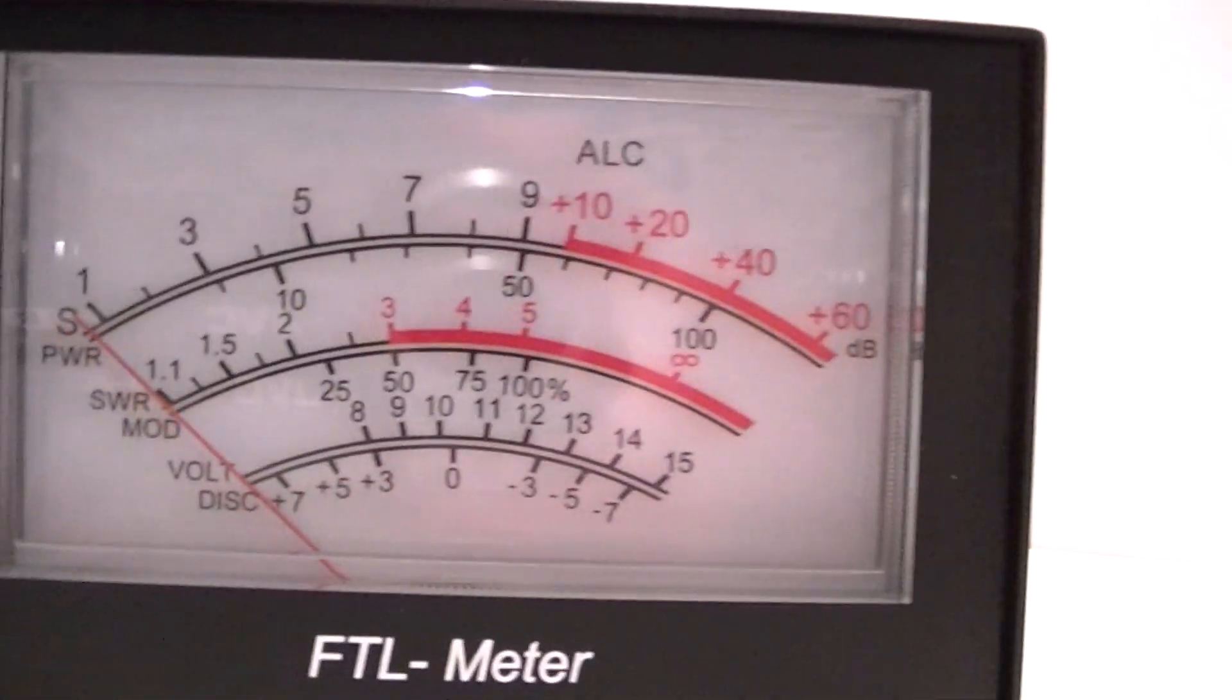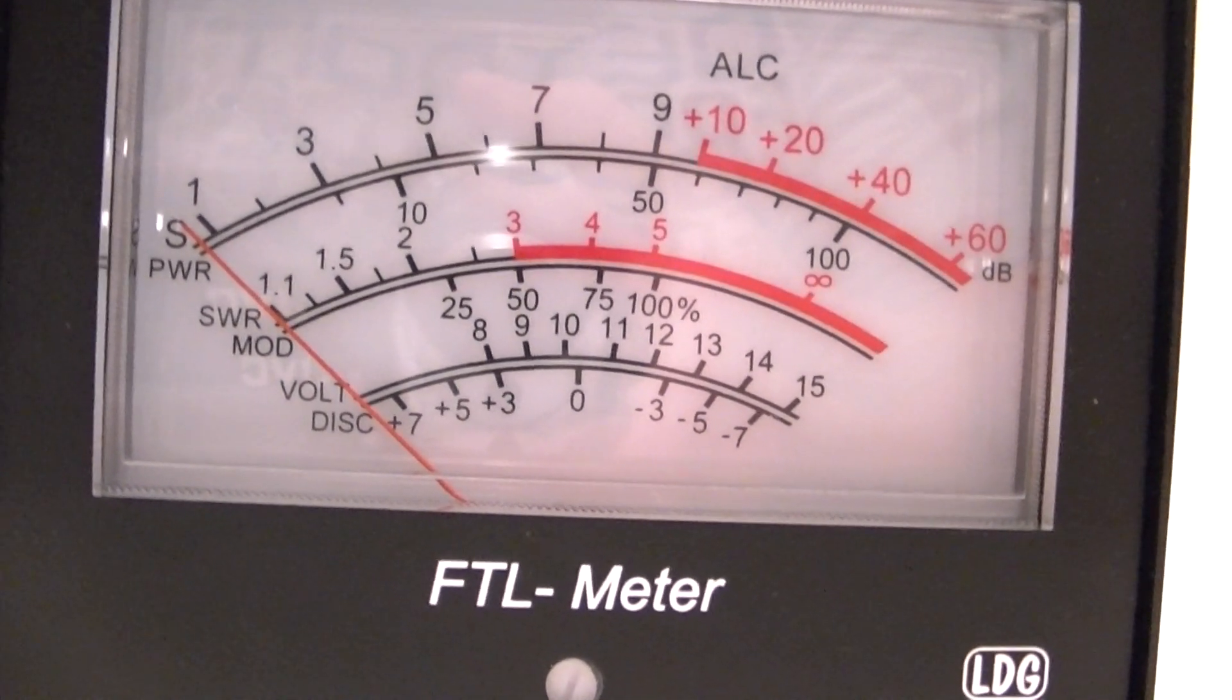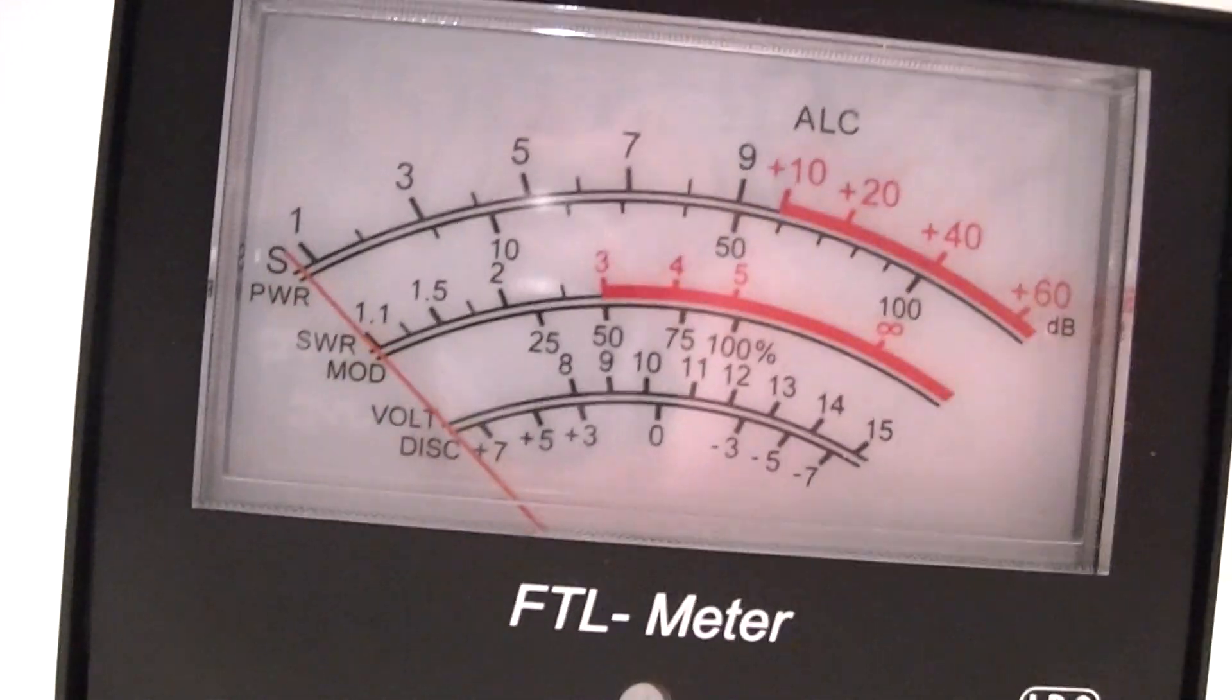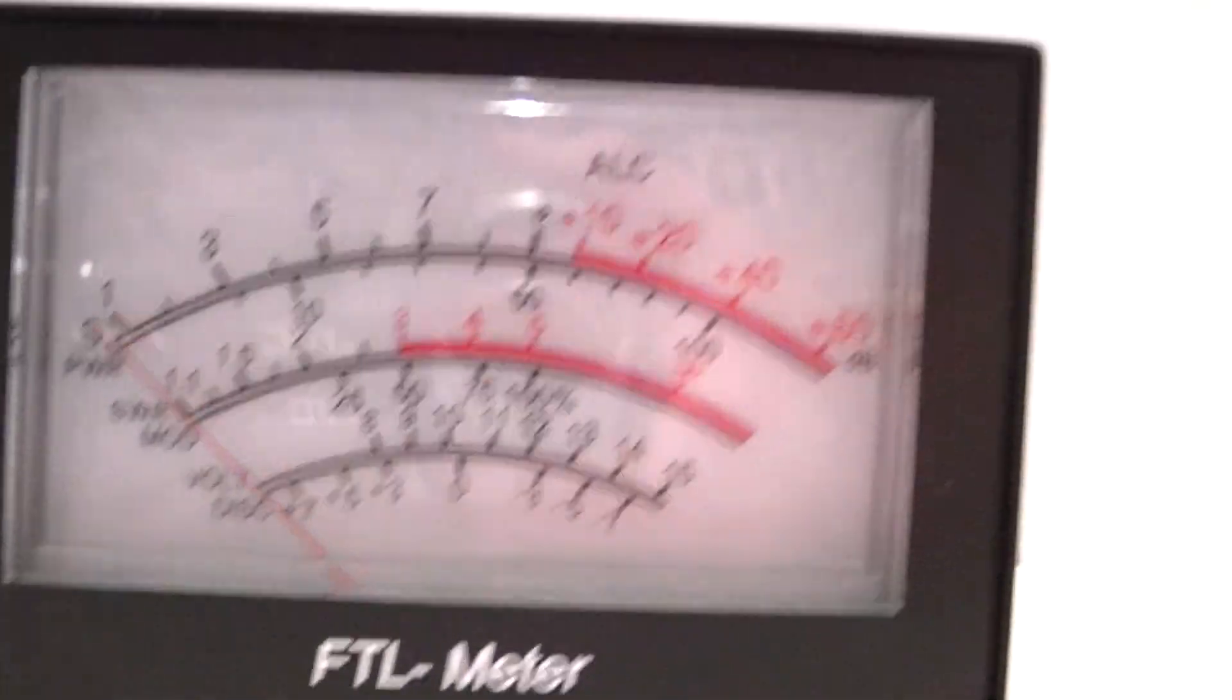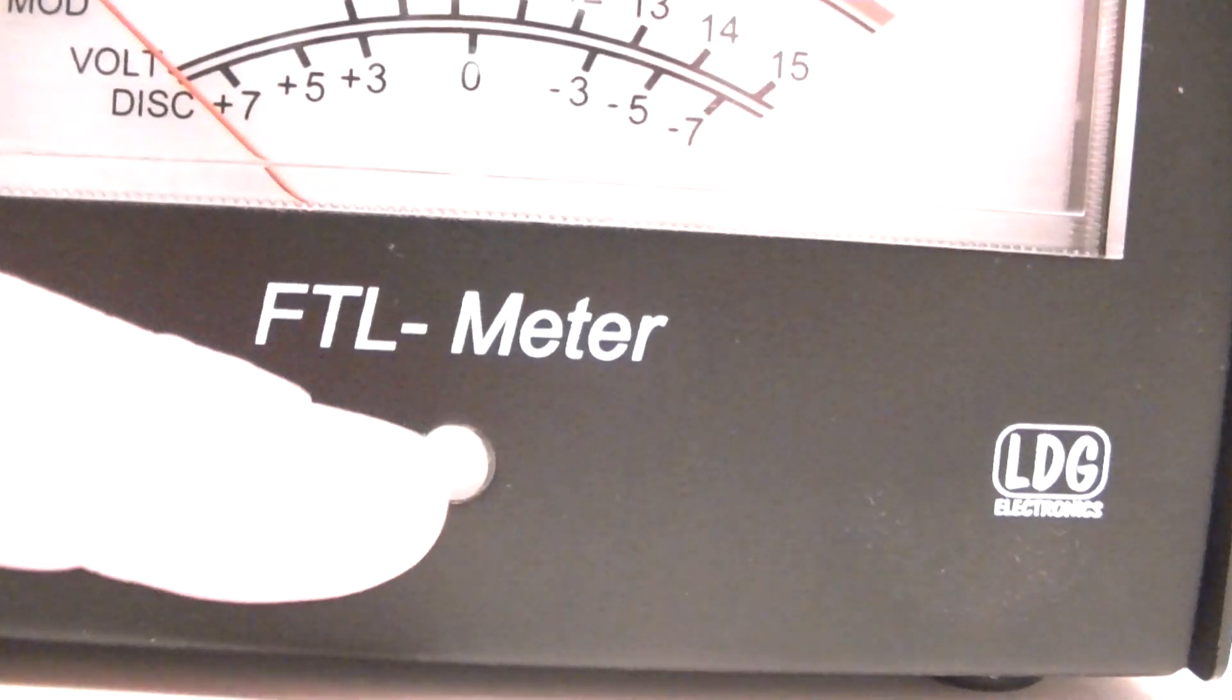You have your SWR, you've got your power, you've got your modulation, your voltage, you got a discriminator right there at the very bottom. You can adjust it. Let me turn it around here. You can also zero the meter out with this screw right there. I have the screws loose here so bear with me.